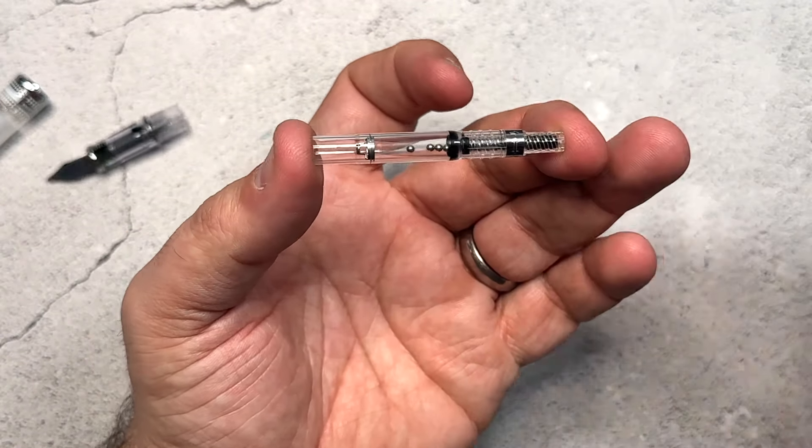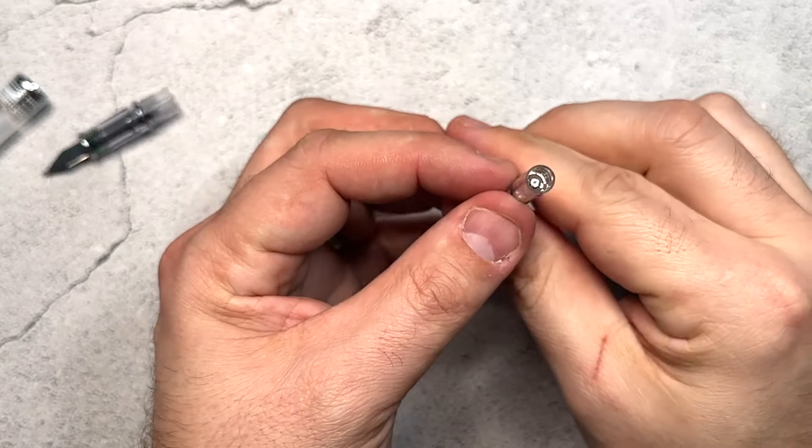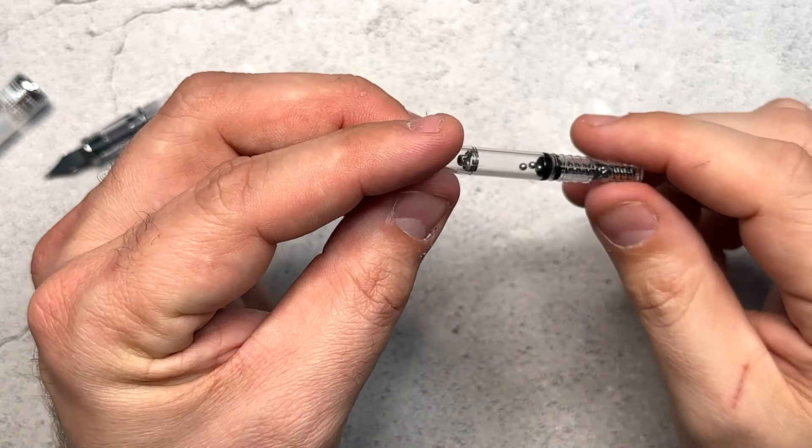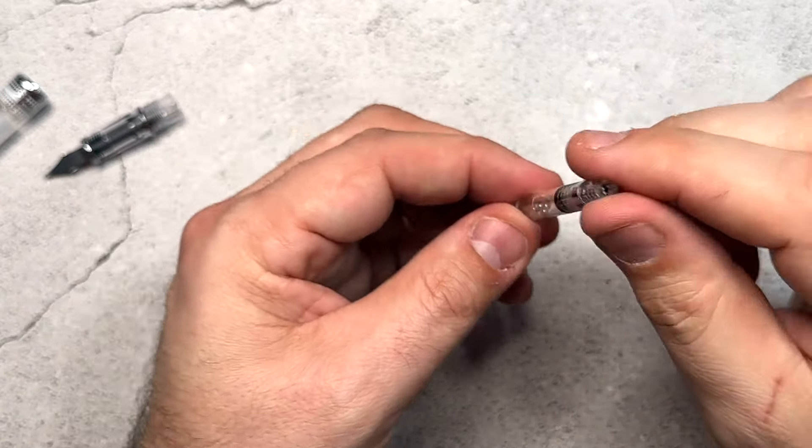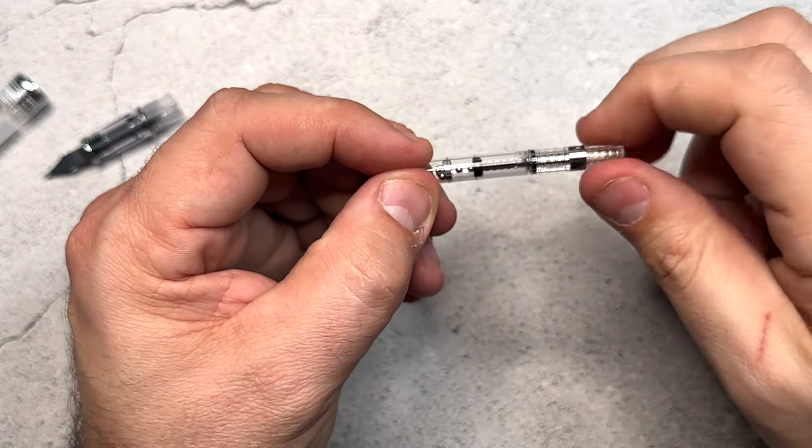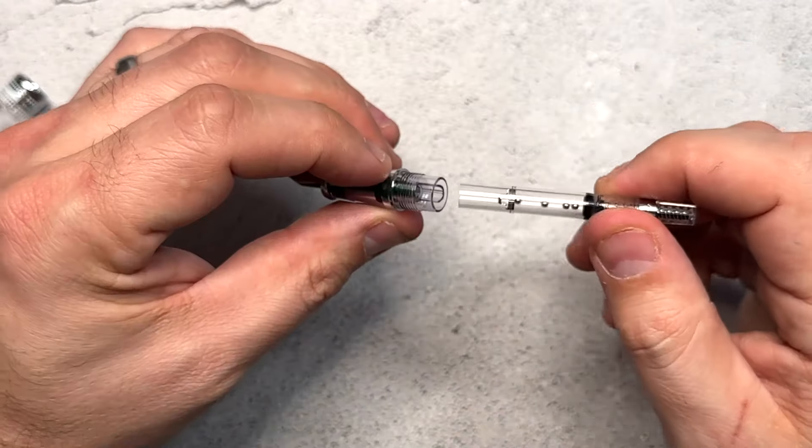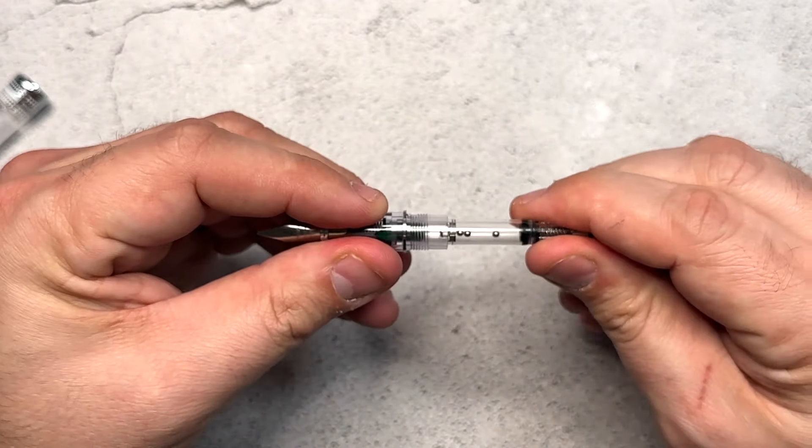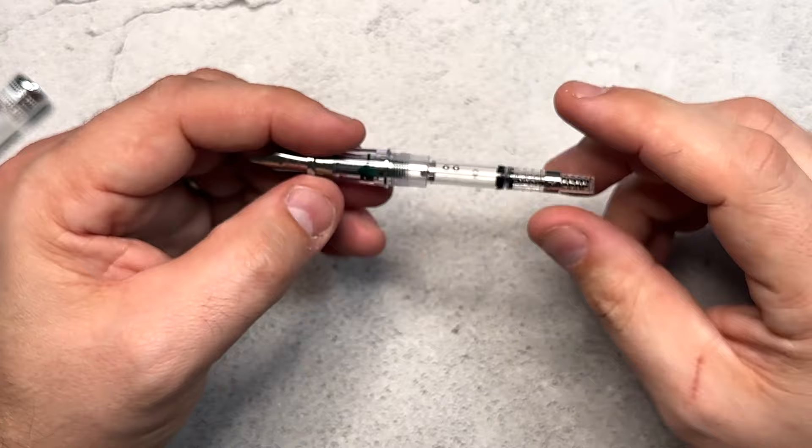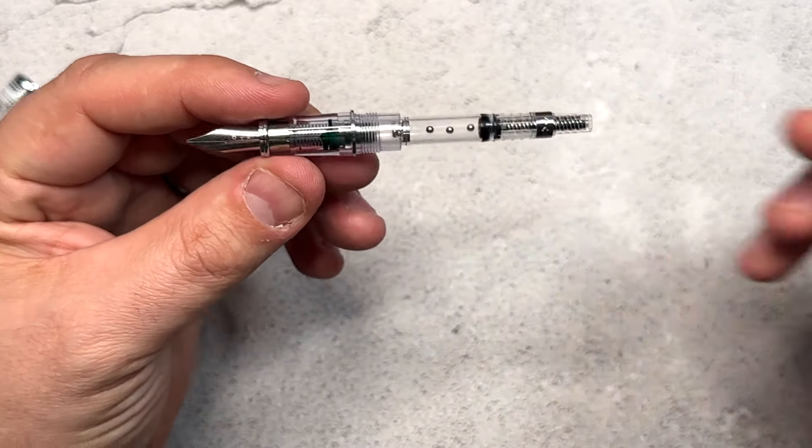It's different than any of the other converters that I have. Which is always interesting to check out new things. Much larger on the end here. Instead of a spring like some of my other ones it has these little metal balls in it. But it works exactly the same. Nothing's different in how it exactly works. But just something to pay attention to especially if you're like I want to have one converter that works for all my pens. This is not it for you.